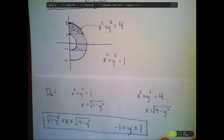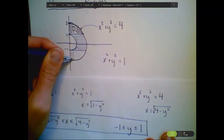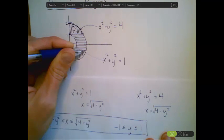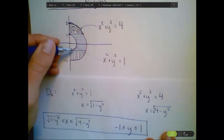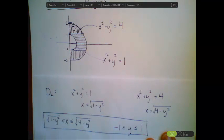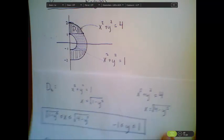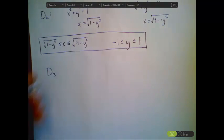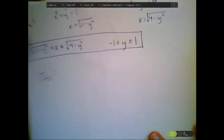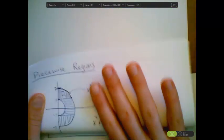Finally, D3 I'll do quickly, because it's going to be very similar to D1 up here. My D3 I'm going to think of as a type 1 region. So for D3, we see that our y values start, they're bounded from below by this curve.